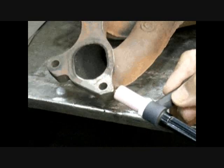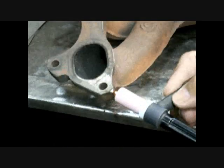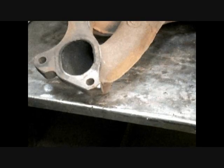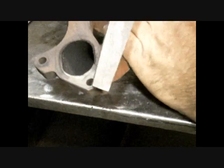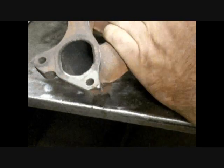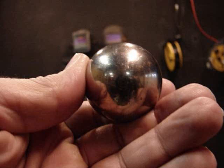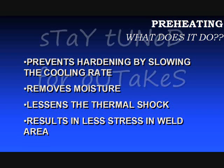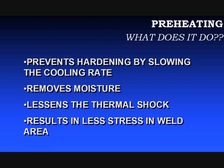Cast iron is normally pretty soft — you can file it easily. But if you puddle the corner like this, you achieve the same effect as heating it red hot and dunking it in cold water. When you run a file over that puddled spot, it just slips over it like a ball bearing. Ball bearings are up around 60 to 65 on the Rockwell C scale — too hard to file. Incidentally, that little exercise of puddling a corner of an exhaust manifold is a good way to tell if something is hardenable, whether it's cast iron or whatever. Just pick a spot that won't matter, puddle it, and file it.